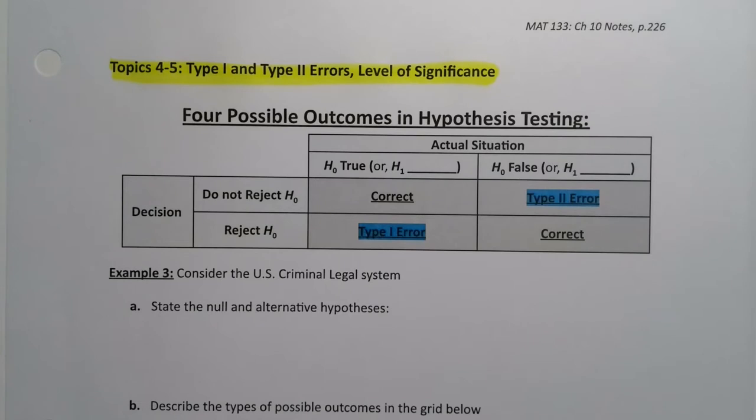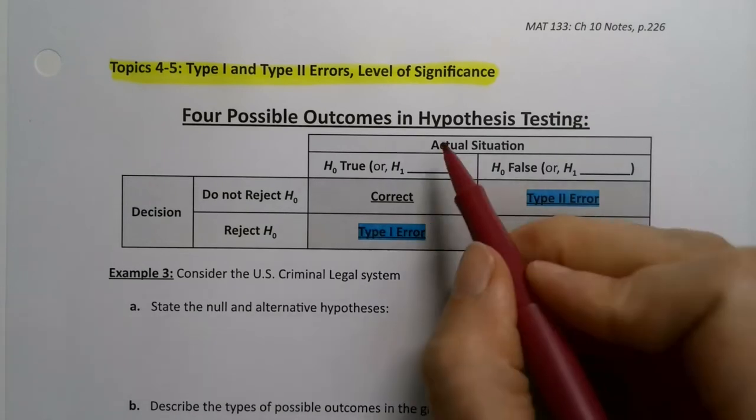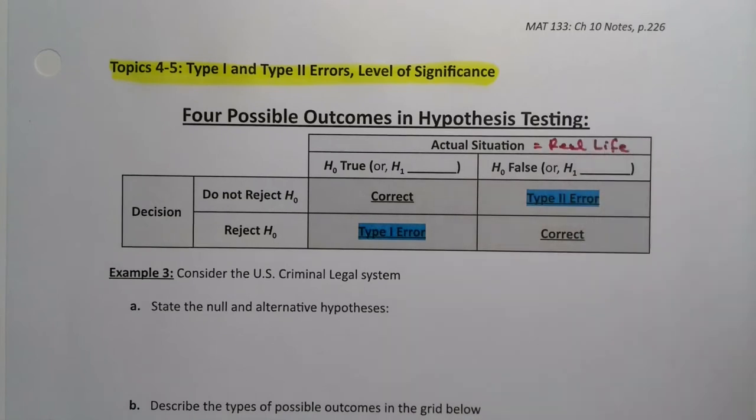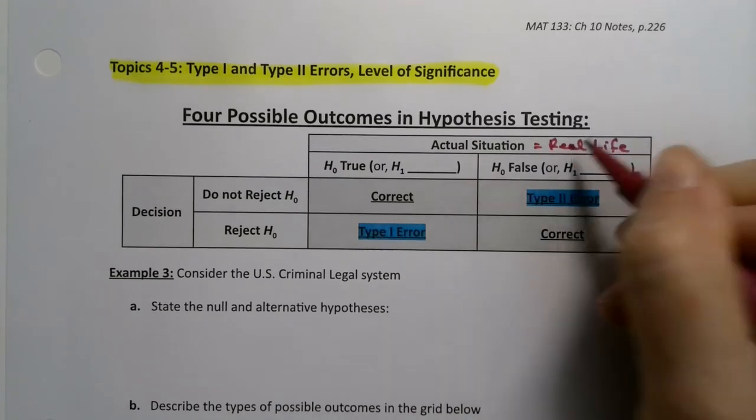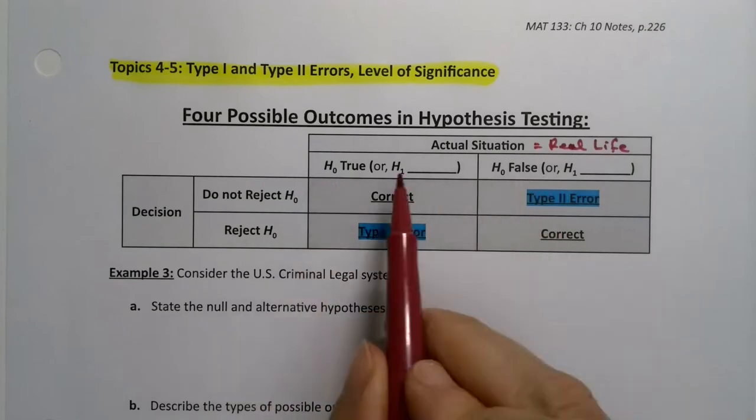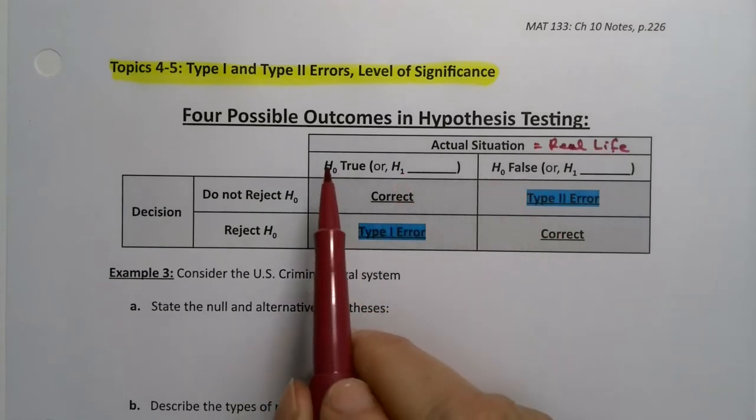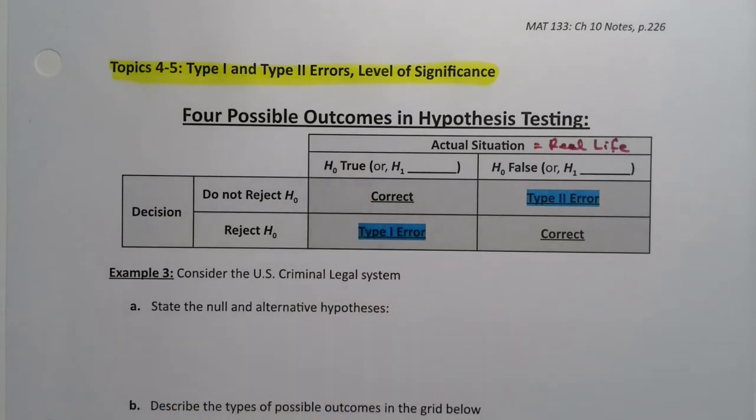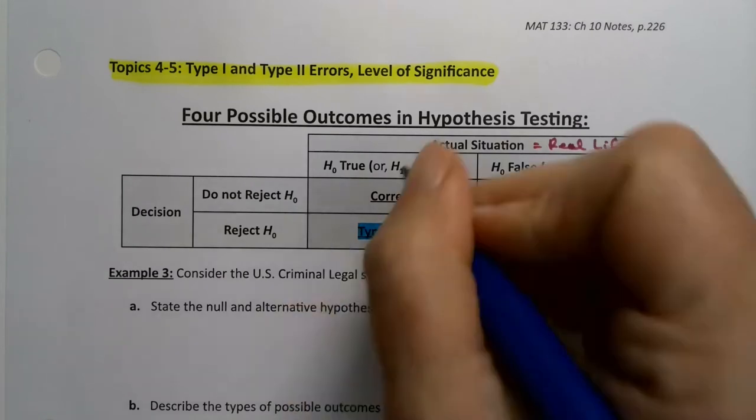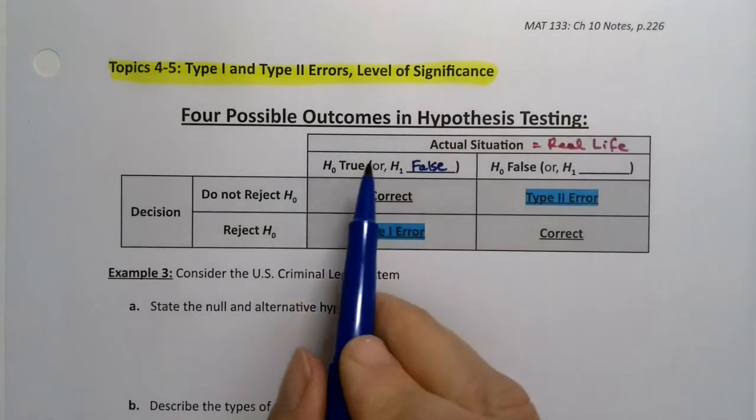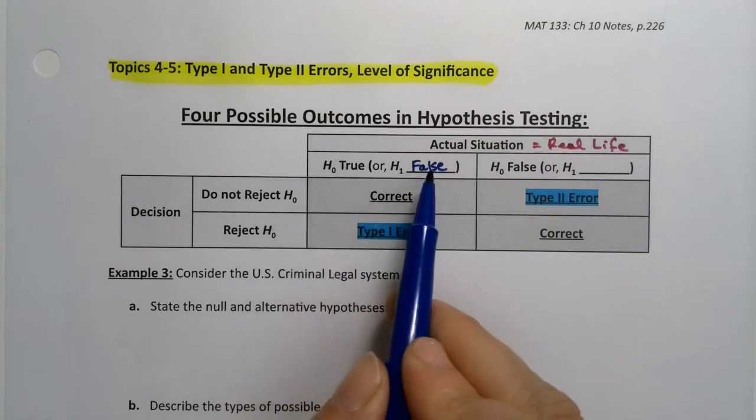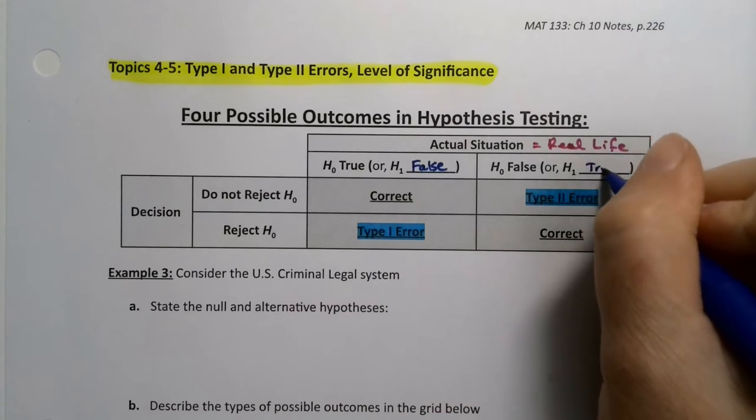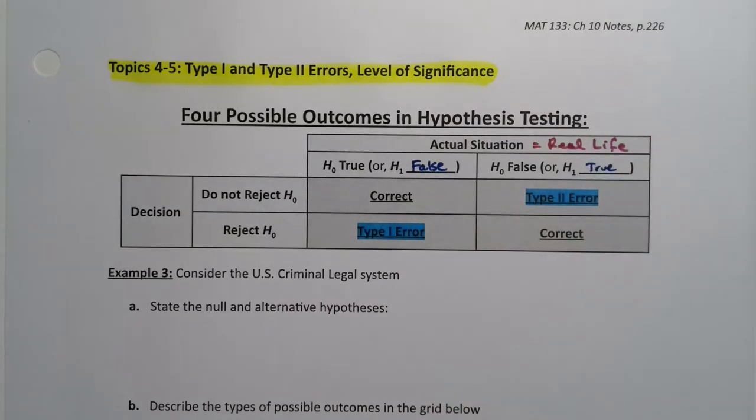But there's an actual situation. There's real life up here. This is real life, the whole population. And when we have that decision, there are two possibilities for truth. It could be true that the null hypothesis is true. In other words, the alternative hypothesis is false. That could happen. So if the null is true, the alternative is false. Or it could be that the null is false and the alternative is true. Those are the two real life ways to think about this.